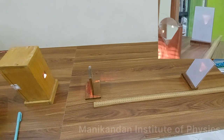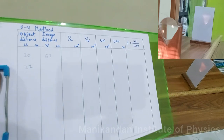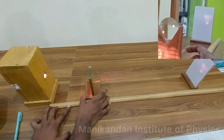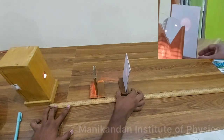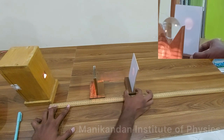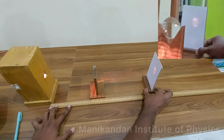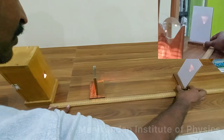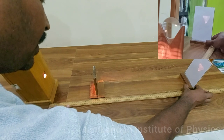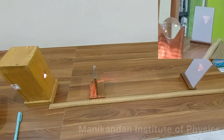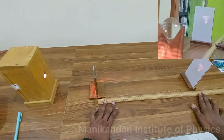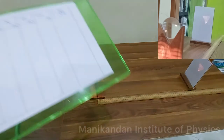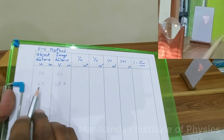Next, I increase the object distance to 22 centimeters and move the screen away from the lens again. A clear inverted image forms at a particular point. Measuring the distance from the lens to the screen gives v = 48.5 centimeters for the object distance u = 22 centimeters.